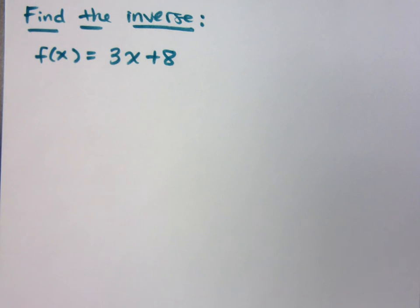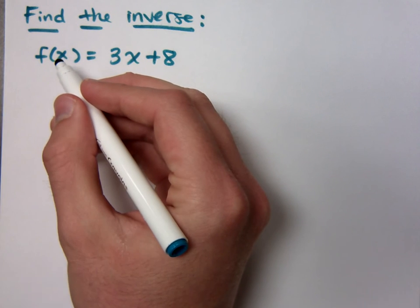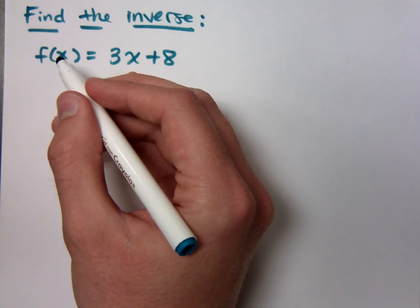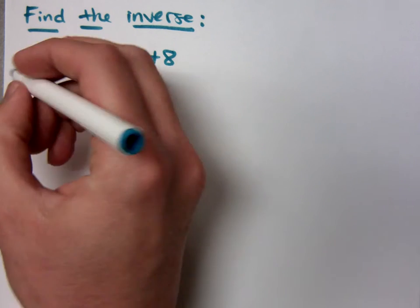Now, if you remember the steps we took to do that last time, we replaced the f of x with y, we swapped the x's and y's, we solved for y, because when we switch the x's and y's, we're then looking at the inverse. I even changed the color of my pen. But actually, I want to do this.